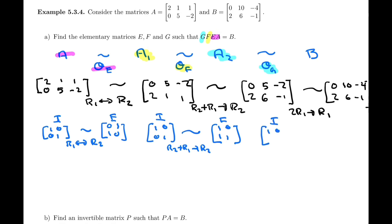And finally, the same thing with the last operation. We're going to do 2 row 1 becomes row 1, and that will give us 2, 0, 0, 1, and that will be matrix G.